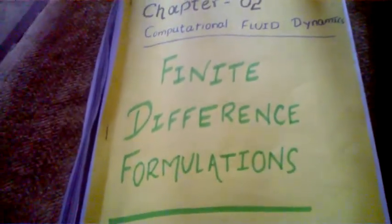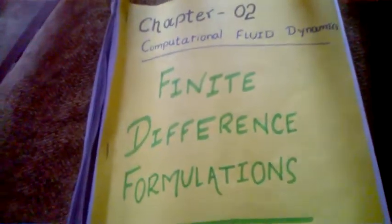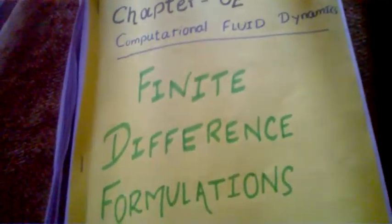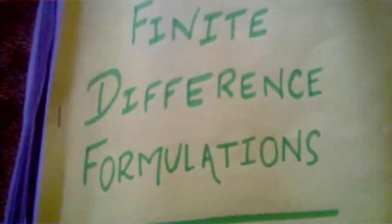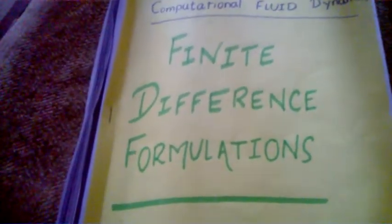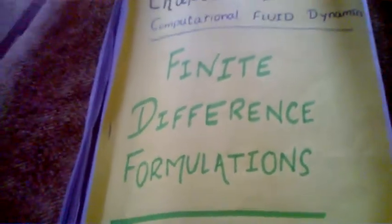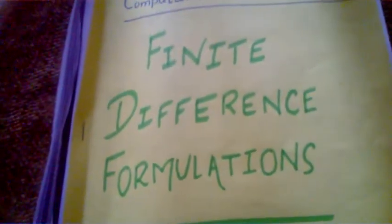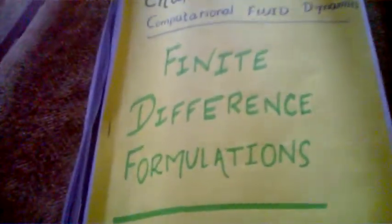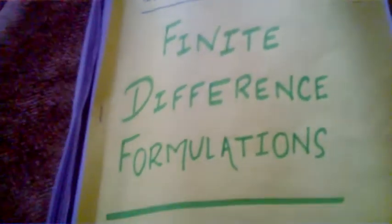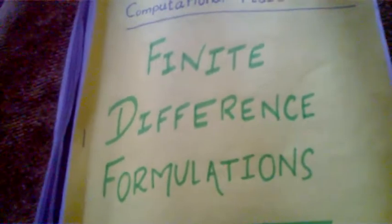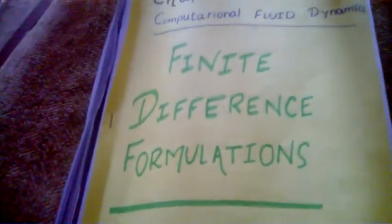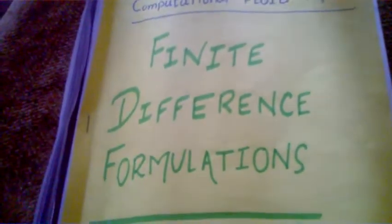This chapter is also relevant for senior undergraduate and beginning graduate levels. The name of the chapter is Finite Difference Formulation. In this chapter we will learn how to convert partial derivatives into finite differences so that computers can easily work on them, since computers work only on arithmetic and logic operations.